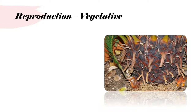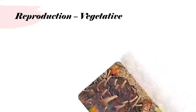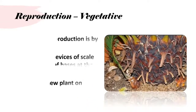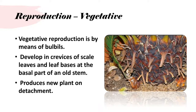Reproduction — vegetative reproduction: vegetative reproduction is by means of bulbils, which develop among the scale leaves and leaf bases at the basal part of an old stem. They produce new plants upon detachment.